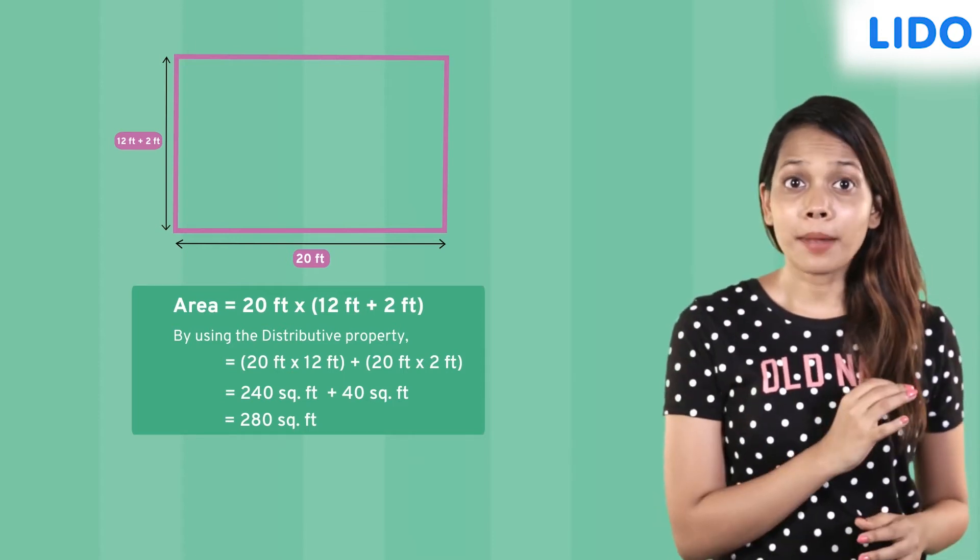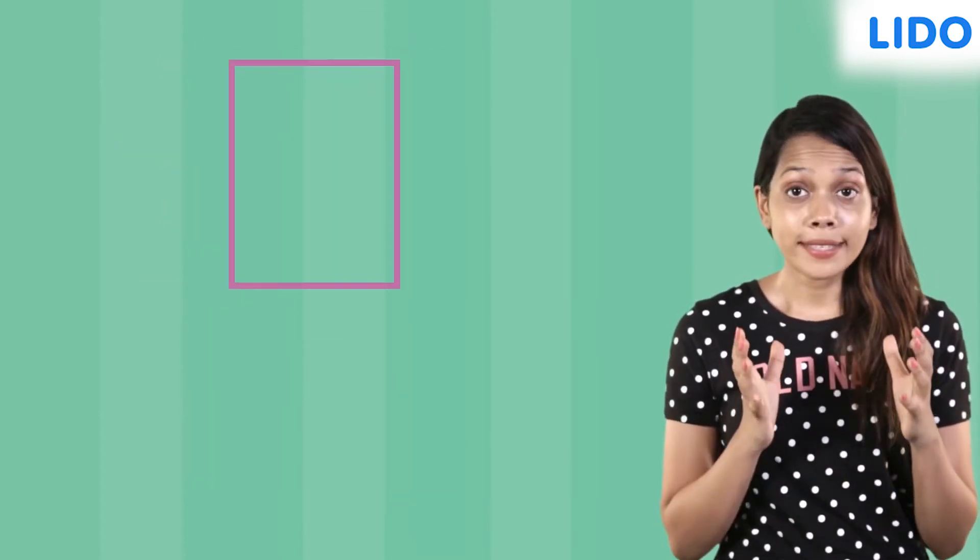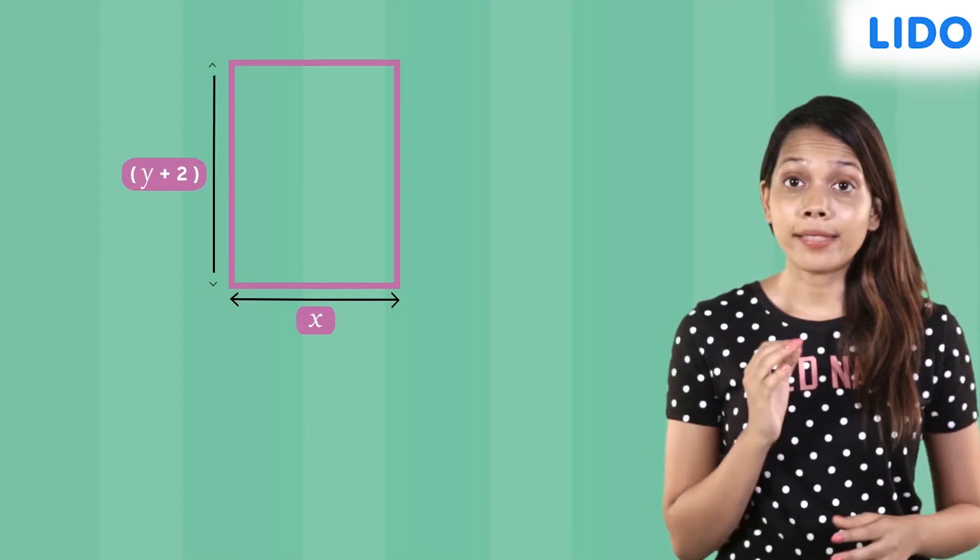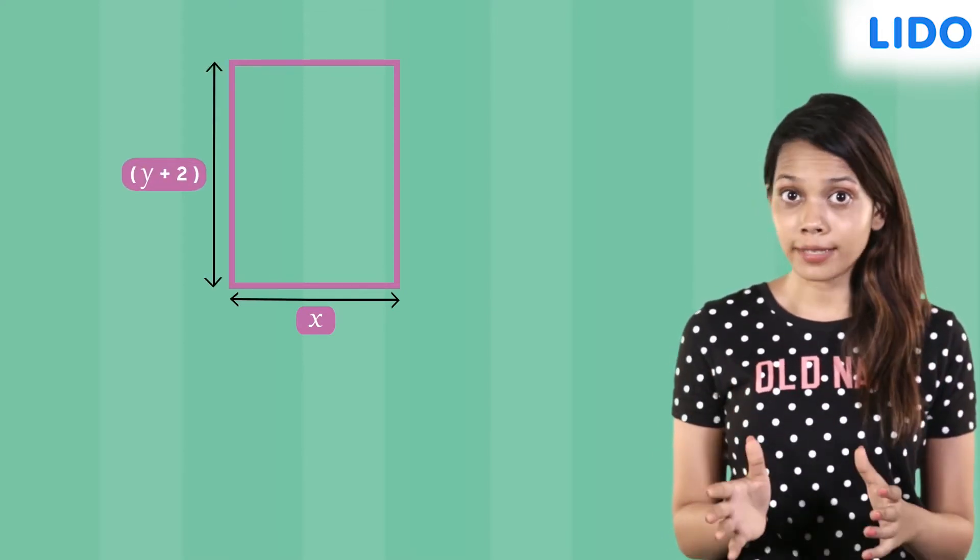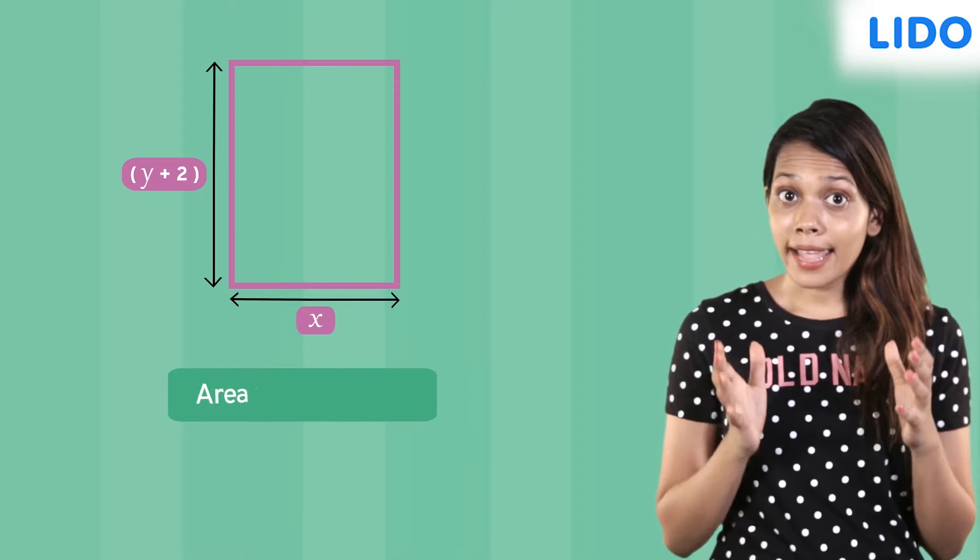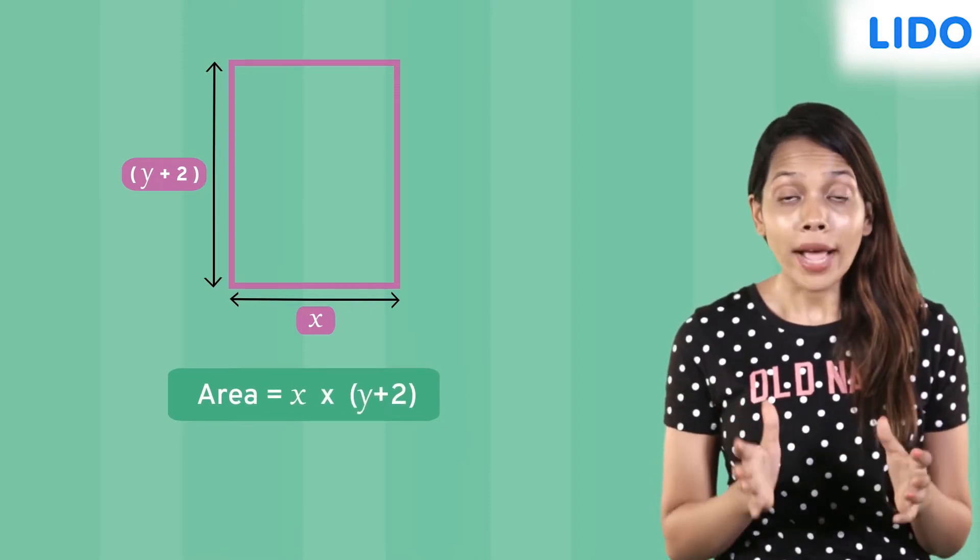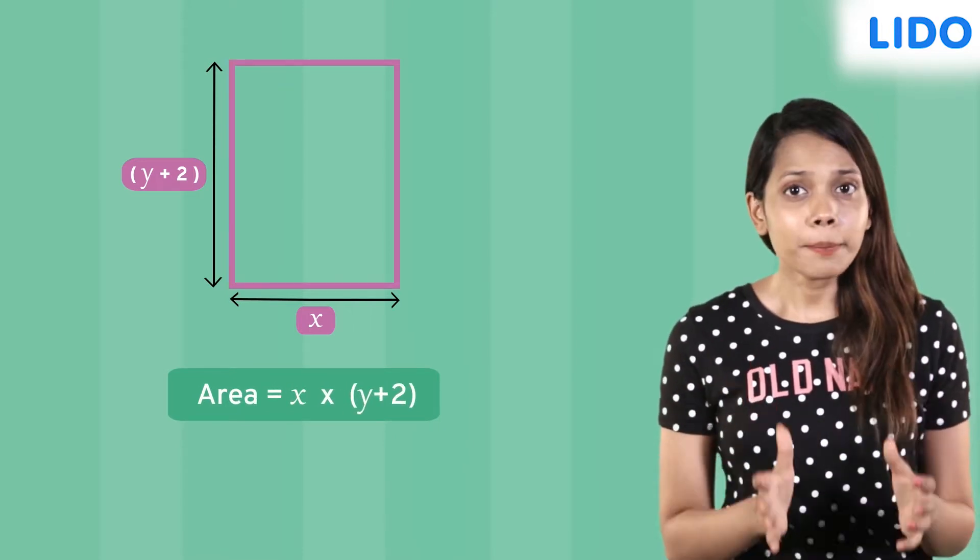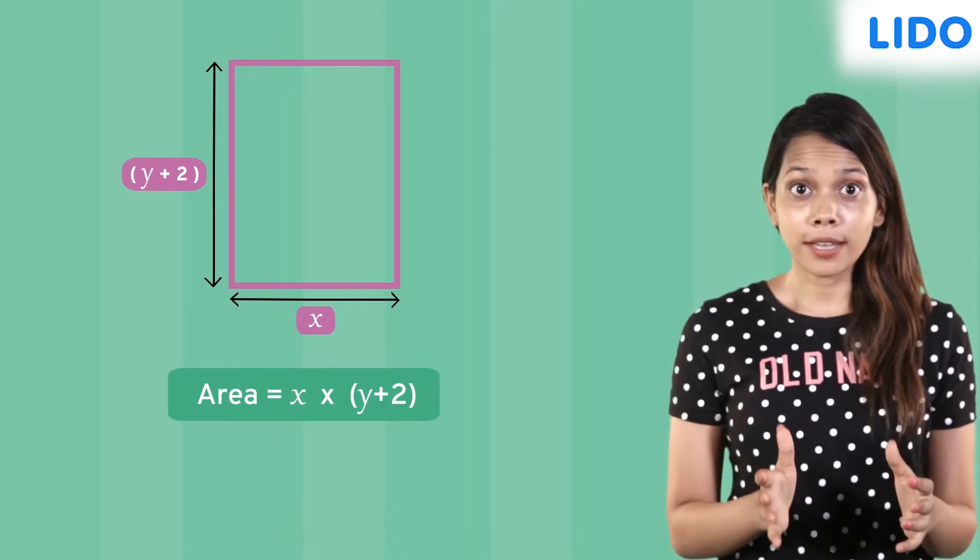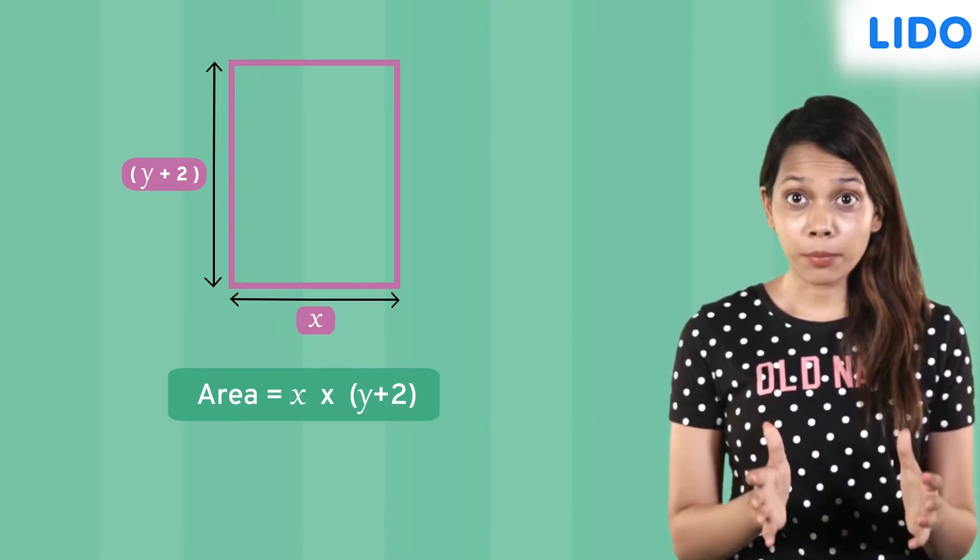Now here is the plan for the dining area whose length is x feet and the breadth is y plus 2 feet. So the area is x multiplied by y plus 2. We can apply the same distributive property to multiply algebraic expressions as well.